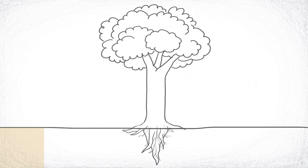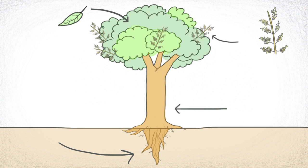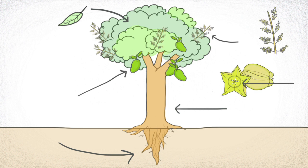Tubuh tumbuhan tersusun dari beberapa bagian. Di bagian paling bawah ada akar, lalu batang, daun, bunga, buah, dan biji.